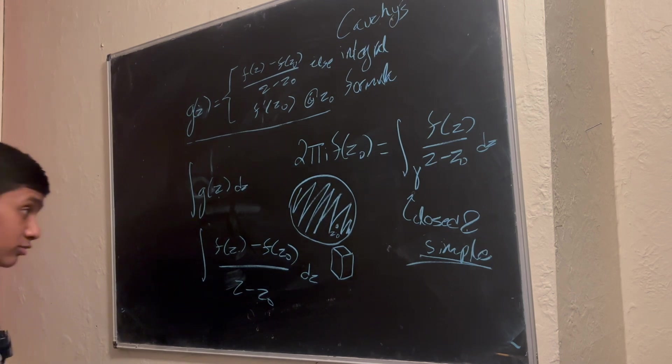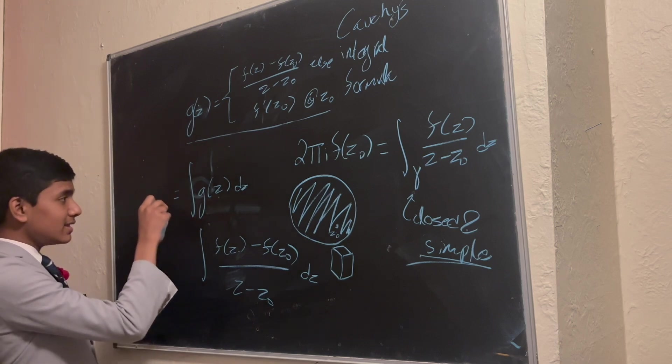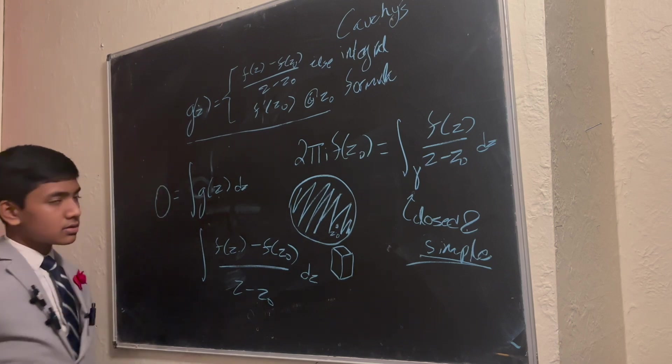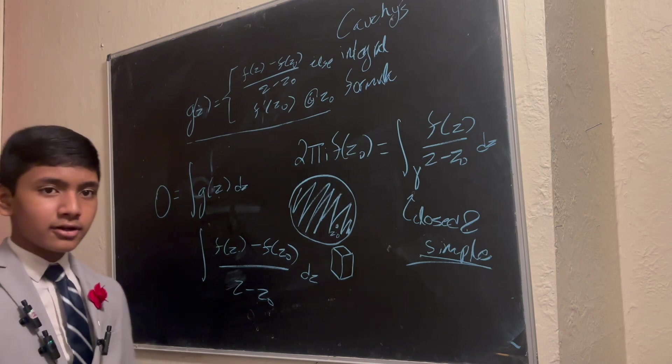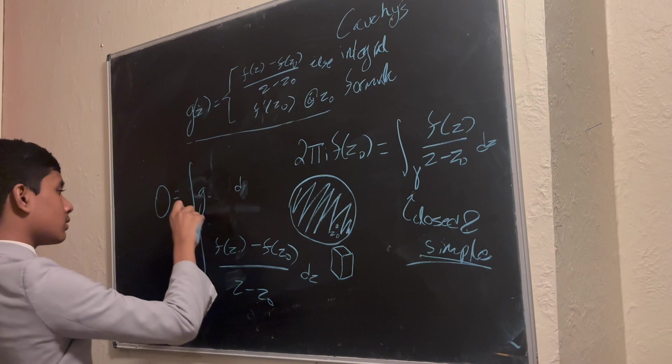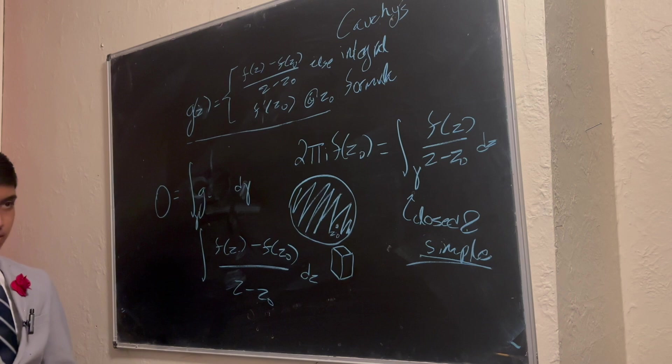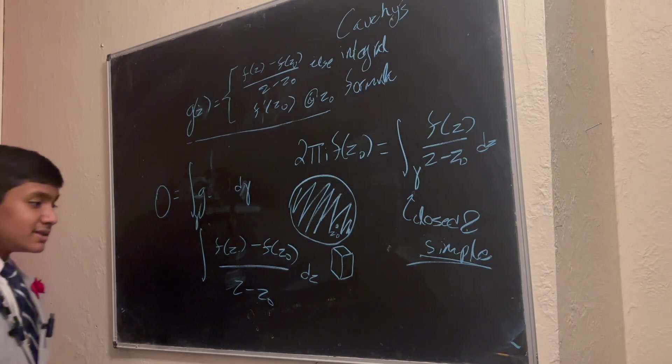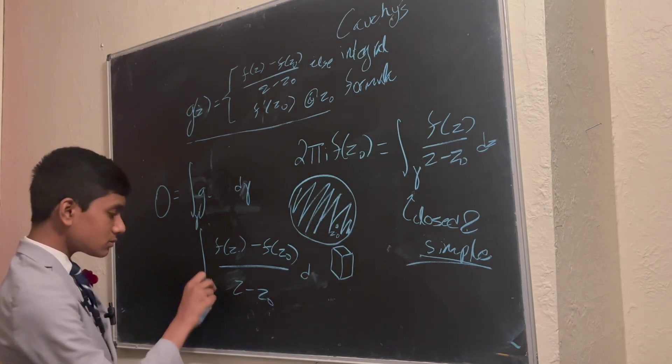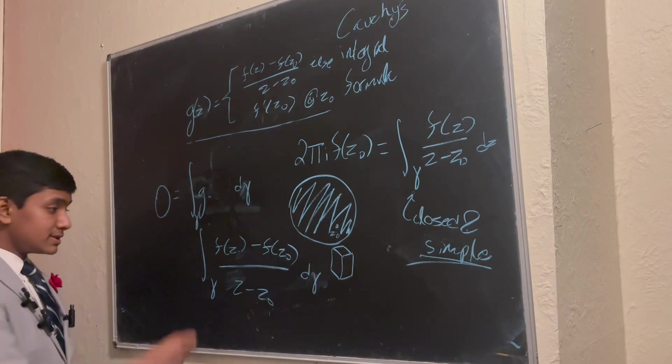But through Cauchy's theorem, we're able to say that this, through the fundamental theorem of contour integrals, is equal to zero if you integrate over the contour, the simple closed contour, which means that this integral is equal to zero.